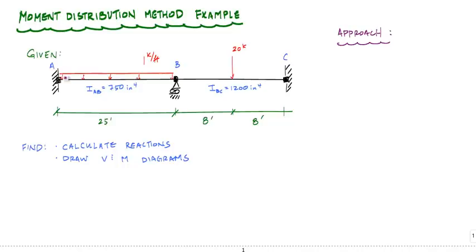We've got a fixed support at A, roller support at B, fixed support at C, a distributed load of one kip per foot in span AB, a concentrated load of 20 kips in span BC, two different moments of inertia on these segments, and two different lengths. What I want to do ultimately is calculate reactions and draw the shear and moment diagrams.